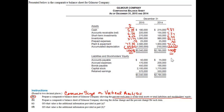What this allows me to do is see that cash has declined in its proportionality. Accounts receivable has grown. Short-term investments have increased, so maybe better cash management is going on. Inventories have declined. Prepaid expenses have declined. Plant and equipment have increased. And depreciation has increased. So it allows me to see the shifting of the mix of assets.